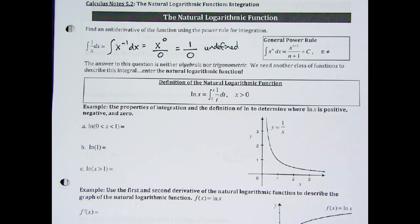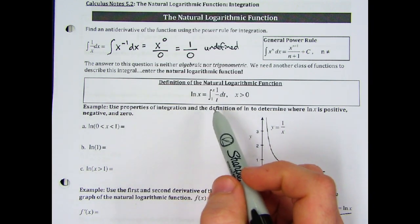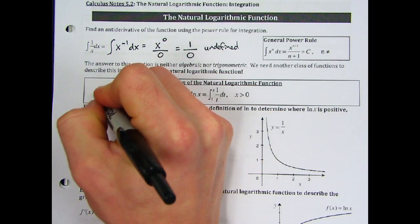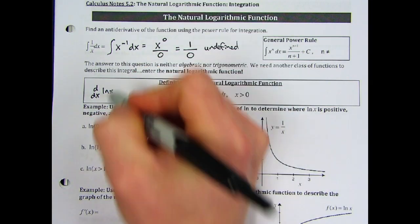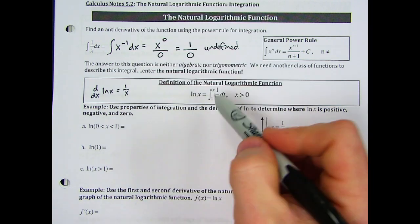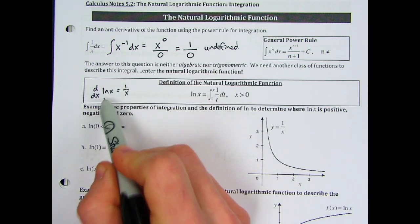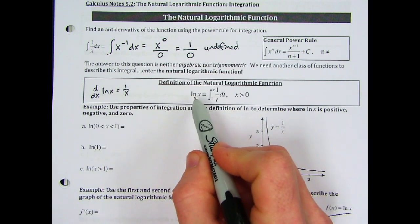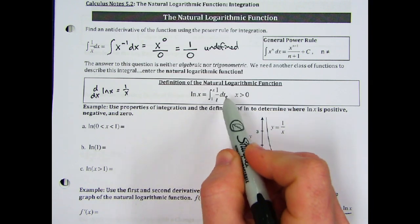This should not come as a surprise because last time we found that the derivative of ln(x) equals 1 over x. We know that the integral undoes the differentiation, so if we undo 1 over x, we get ln(x). Now we have the actual definition of natural log: it's the definite integral from 1 to x of 1 over t dt, where x is greater than 0.